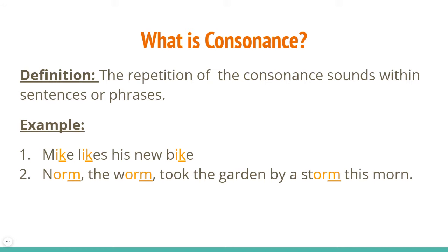Consonance is the repetition of that same consonant sound within sentences or phrases. So alliteration is at the start of every word or the majority of the words. Consonance is within those sentences or phrases or words. So for example: Mike likes his new bike.